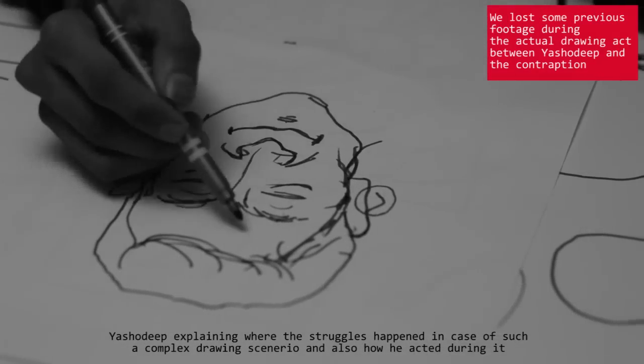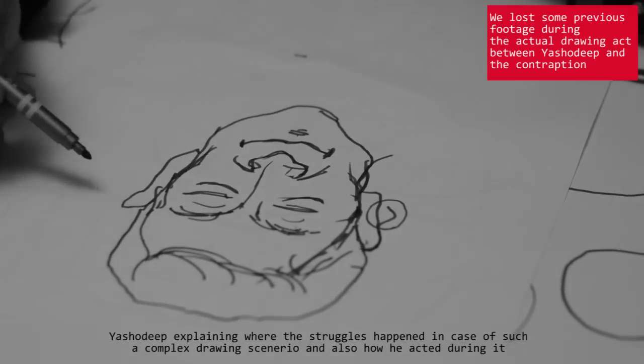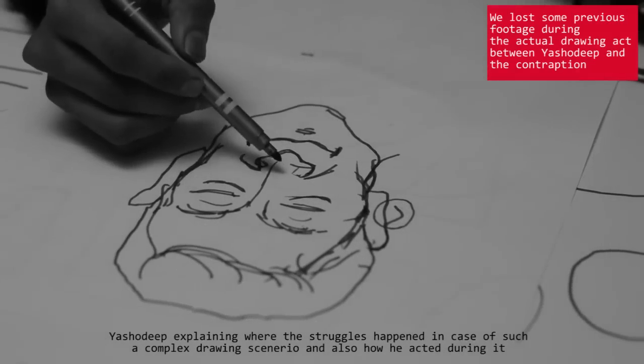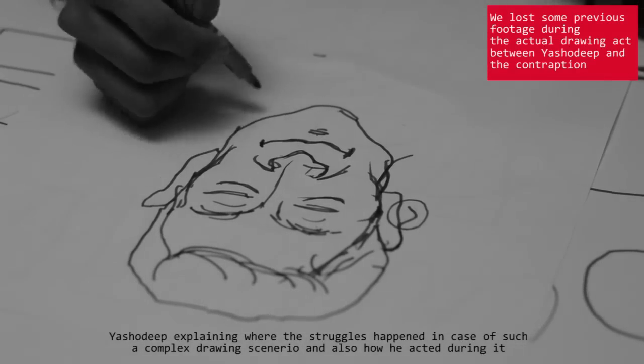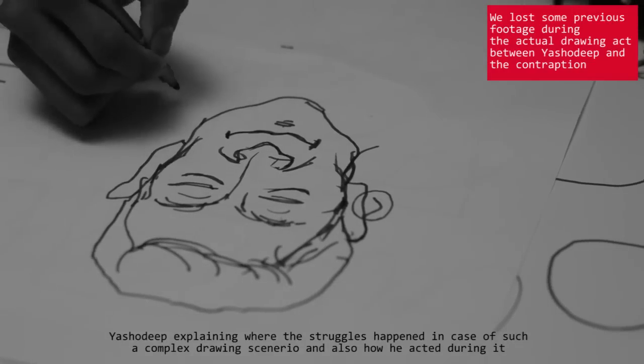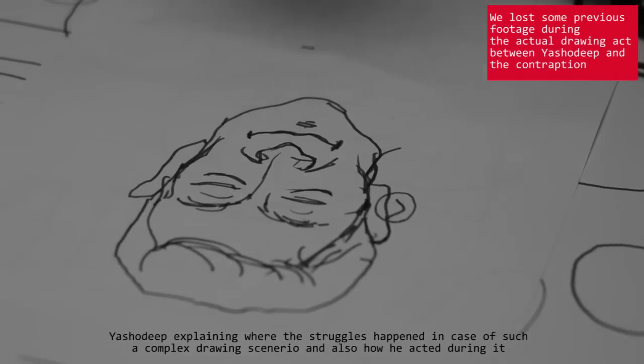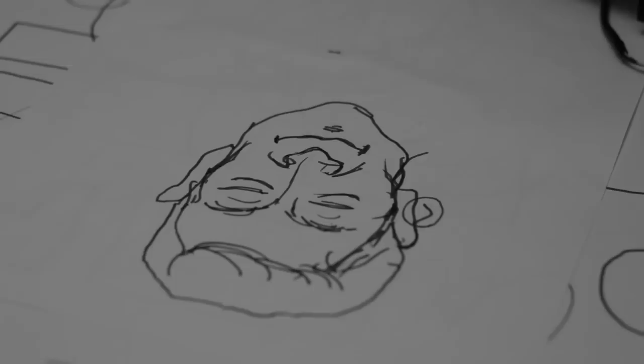So here, if you see, the lines are going crooked here or here. But at the same time, I was trying to understand that, and I was creating the lips in such a way that when it's not forcing, I'll draw something else.